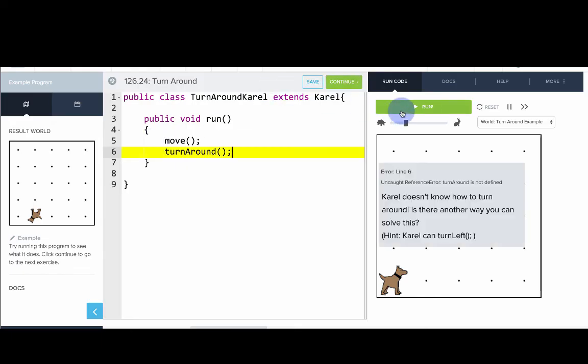Okay now we're getting an error and the error is because turn around isn't defined. We haven't taught Carol how to turn around yet. So let's do that.